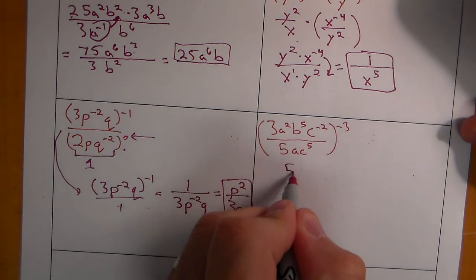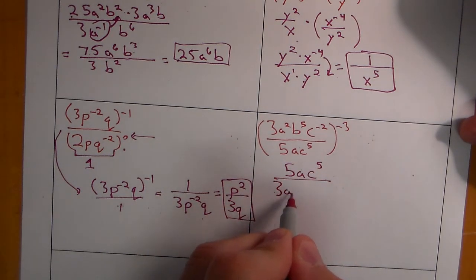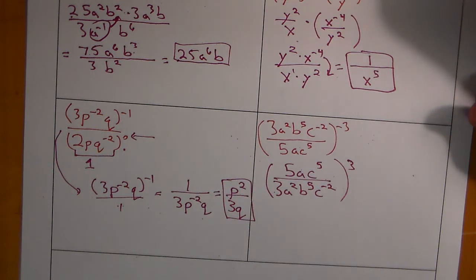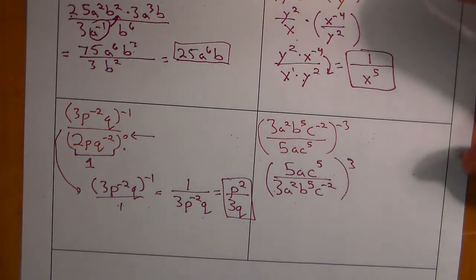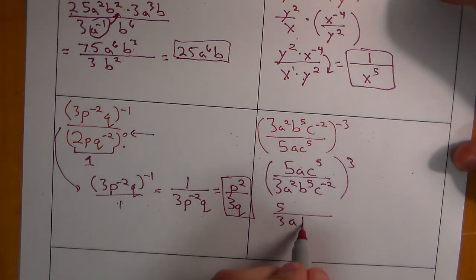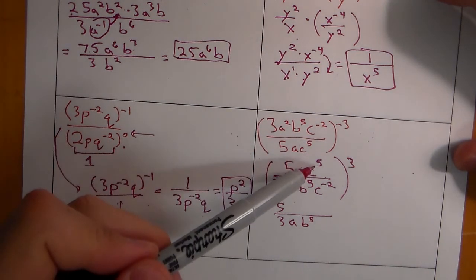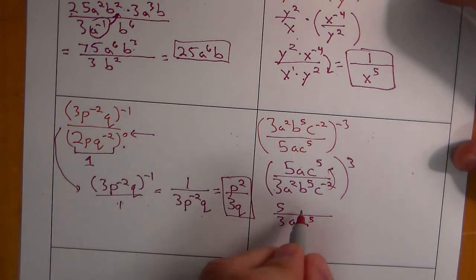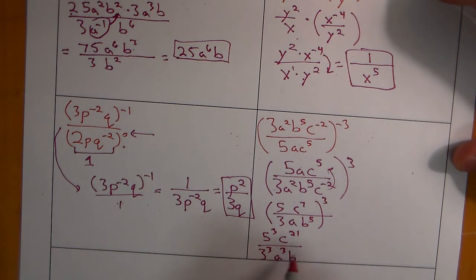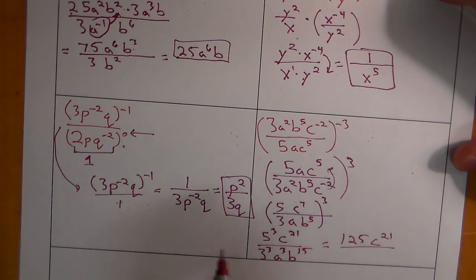For the last problem, take care of the negative exponent first by doing the reciprocal — not the cube yet, just the negative part. Then clean up variables: a over a squared leaves 1a on the bottom; b to the fifth stays on the bottom; c to the fifth and c to the negative 2 — the negative 2 comes up to make c to the seventh. Now apply the third power: 5 to the third is 125, c to the twenty-first, 3 to the third is 27, a to the third, b to the fifteenth.